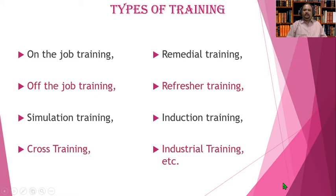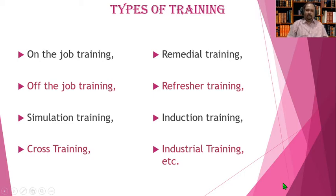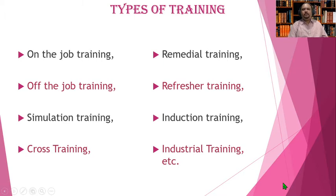On-the-job training is the type of training given to a person while they learn by doing the job, and hence it is known as on-the-job training. Off-the-job training is any type of classroom training given in lecture method, or training which is not done at the place of the job.